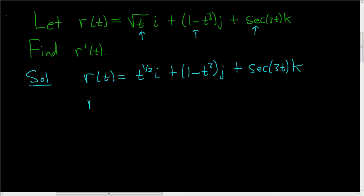Now we're ready to take the derivative. We'll just take the derivative of each component. Here we'll use the power rule. Bring the 1/2 down and subtract 1, so we get negative 1/2, and then we have i. The derivative of 1 is 0, so we just bring 3 down. We get minus 3t squared j.